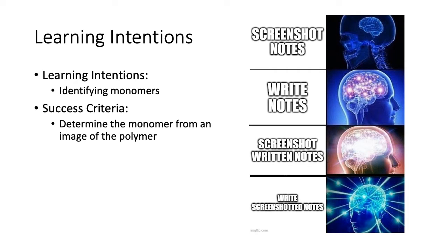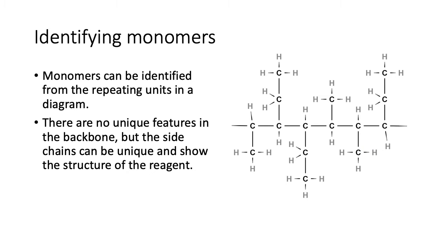All right, so we're going to be learning how to identify monomers. Monomers can be identified from the repeating units in a diagram. There are no unique features in the backbone, but the side chains can be unique and show the structure of the original reagent.